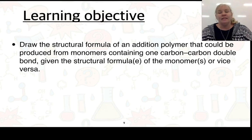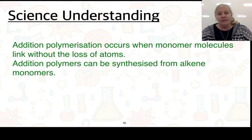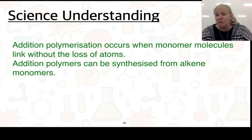The second learning objective is for you to be able to draw the structural formula of an addition polymer that could have been produced from monomers containing one carbon-carbon double bond, given the structure of the monomers, or vice versa. Addition polymerization occurs when monomer molecules link without the loss of atoms — nothing is lost, it's just added on.